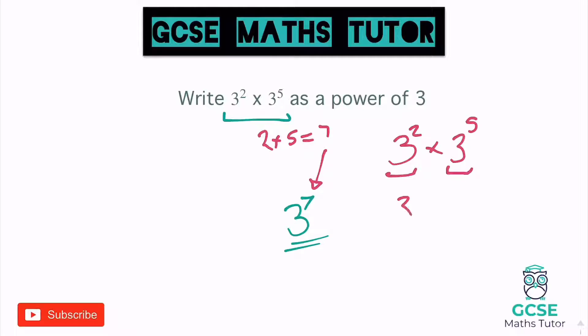This, however, wouldn't work if it was three squared times two to the power of five. There's no little quick rule for that. We can't add the powers together because these base numbers now are not the same. So we're going to be having a look at questions where the base numbers are the same.